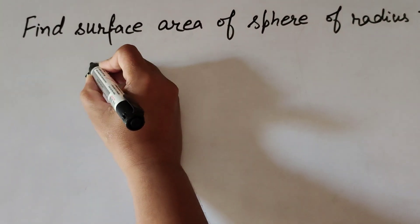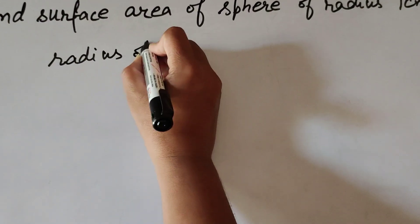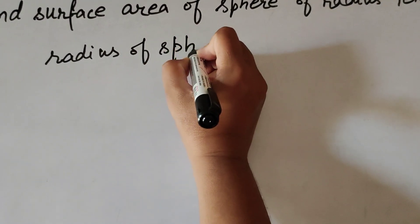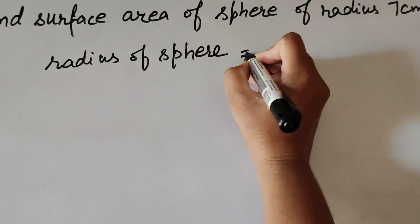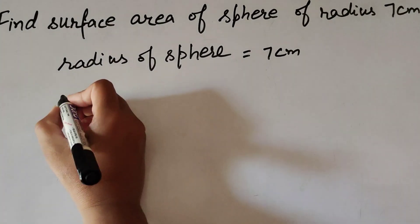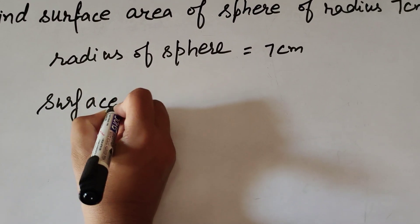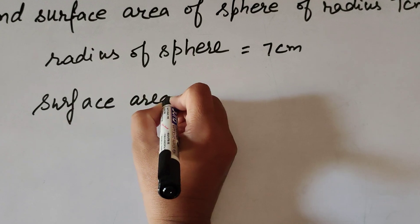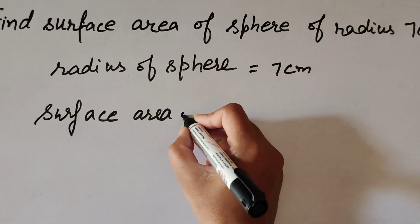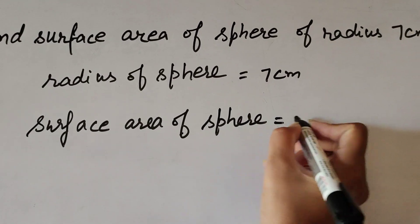So given thing is radius of sphere, it is equal to 7 cm. We find surface area of sphere. We know the formula to find surface area of the sphere.